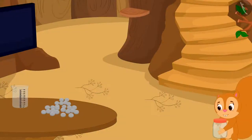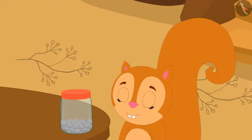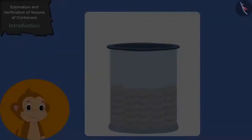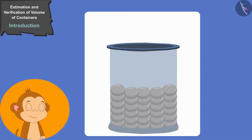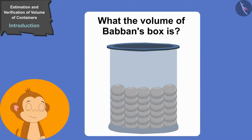Chanda immediately took a box of 1 litre ghee and started to collect the bottle caps of Golu's masala milk. Time passed by quickly, and soon it was the 10th day. All the people had collected different numbers of bottle caps. Children, if Babban has collected 30 bottle caps in his box and his box is only half full, can you tell what the volume of Babban's box is?